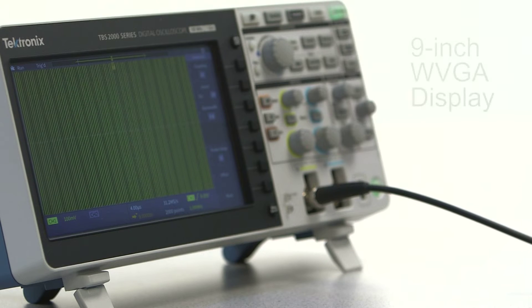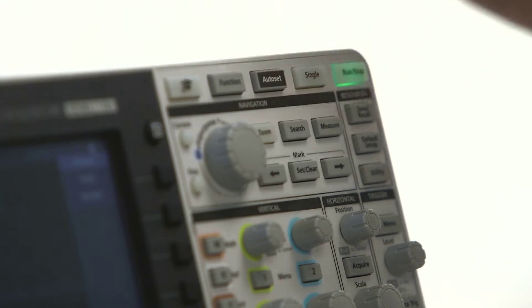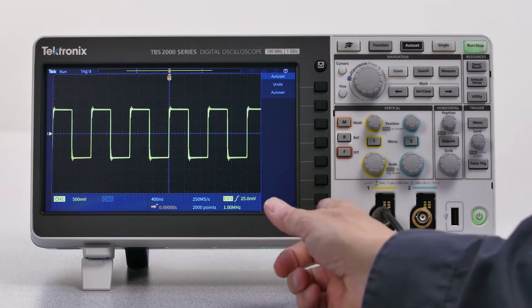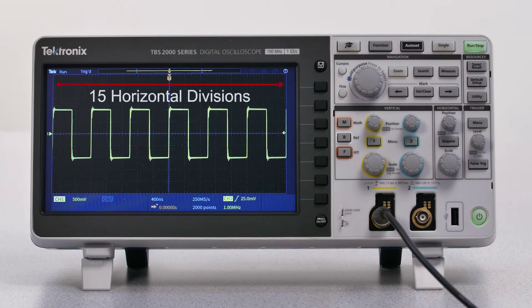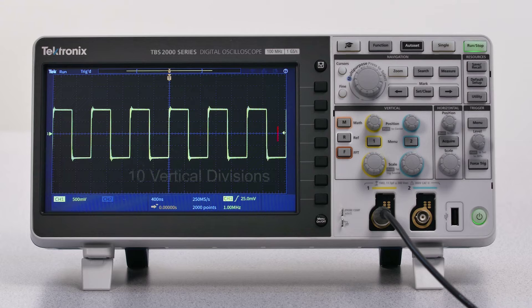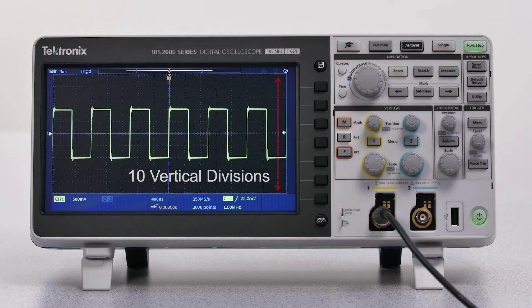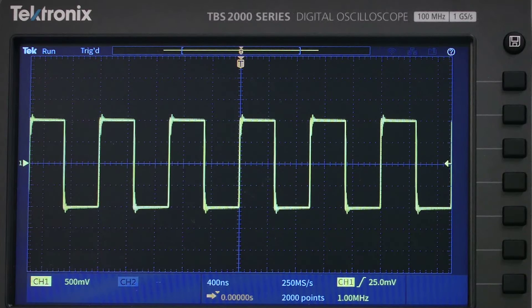Signals are easy to look at on the 9-inch high-resolution display. Many scopes have 10 horizontal divisions and 8 vertical divisions, but the TBS 2000 has 15 horizontal divisions and 10 vertical divisions, so you can see significantly more of your signal.